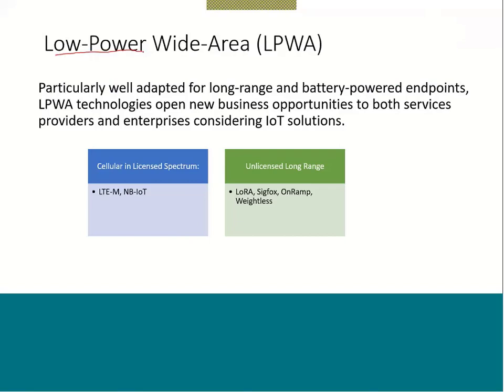There are technologies available that require more power, but our focus remains on low-power, long-range, battery-powered endpoints. LPWA technologies open new business opportunities for service providers and enterprises considering IoT solutions. In the licensed spectrum, there are standards like LTE-M and Narrowband IoT. In the unlicensed long-range category, there are technologies like LoRa, Sigfox, On-Ramp, and Weightless, among others.